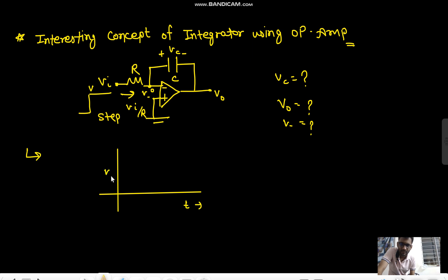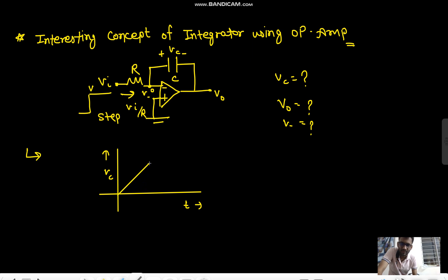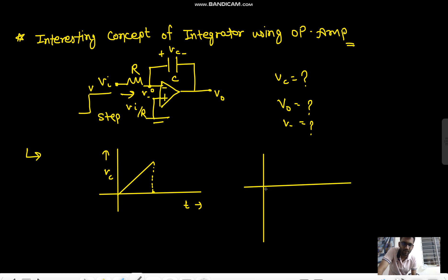So Vc starts charging linearly like this with respect to time t. Now let us assume at some point the output waveform would look something like this — this is V0 with respect to t.